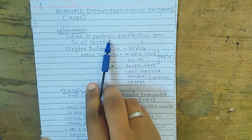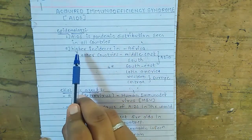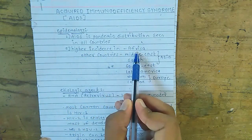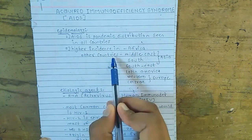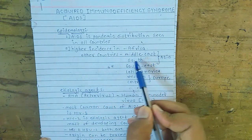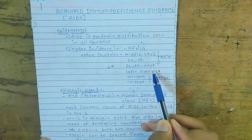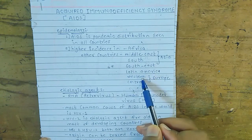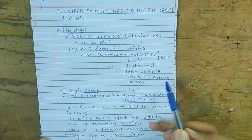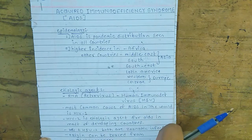AIDS has a pandemic distribution seen all over the countries. Higher incidence is found in Africa and other countries including the Middle East, South and Southeast Asia, Latin America, Western and Central Europe, and India.